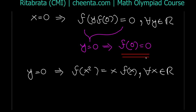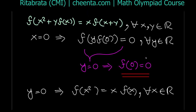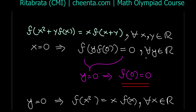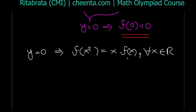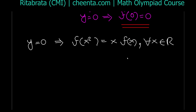So the two obvious solutions are f ≡ 0 and f(x) = x. If we try x³, it doesn't satisfy the equation. Let's now try to show that these are the only two functions.